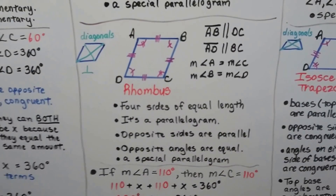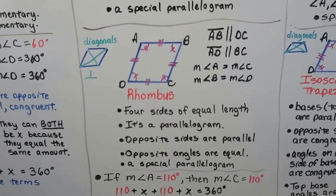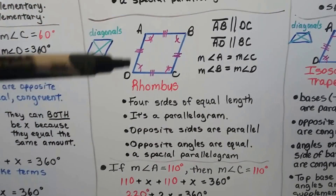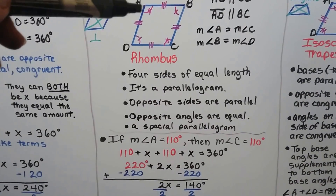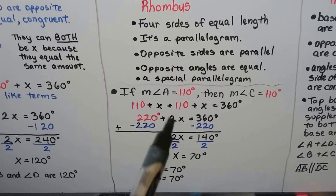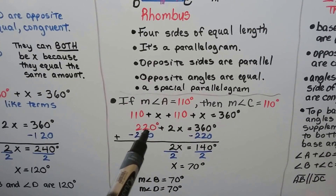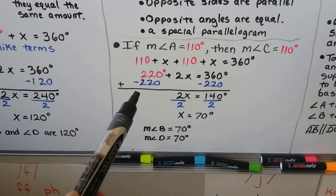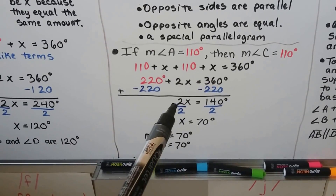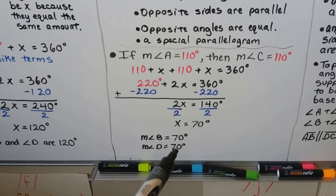Here we have a rhombus. It's got four sides of equal length. It's a parallelogram — its opposite sides are parallel, its opposite angles are equal, and it's considered a special parallelogram. A is congruent to C and B is congruent to D, but all the sides are the same length. If we know angle A is 110 degrees, then C is also 110 degrees. We represent B and D as X: 110 plus 110 plus X plus X equals 360. That's 220 plus 2X equals 360, so 2X equals 140, and X equals 70 degrees. So angle B and angle D are each 70 degrees.